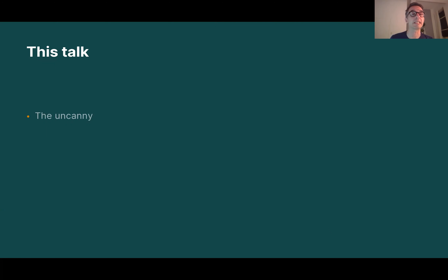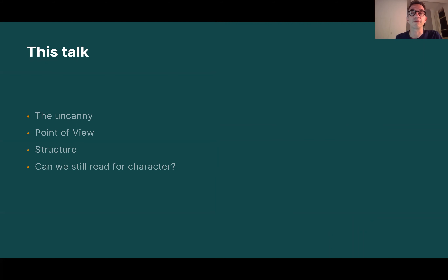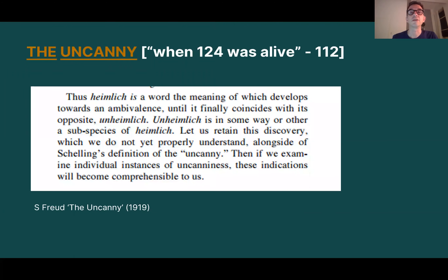Now let's talk about Beloved. In this talk I'm going to cover the uncanny — an important category for understanding how Morrison's novel works — her various ways of playing with points of view, the structure of the book, pointing out some features of structure so you can start thinking about those things in detail. I'm also going to pose a question at the end about whether we can still read this novel for character, which is probably how you want to read it.